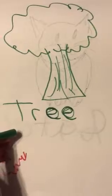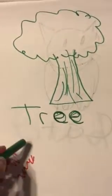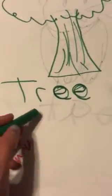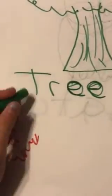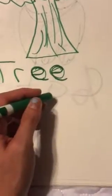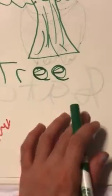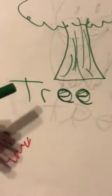Each letter is represented through different dots. So write the word 'tree' in Braille, either in the comments below or by hand. You can get a pencil and do the dots, or in the comments you could type it out — T equals which dots, R equals which dots, E equals which dots.